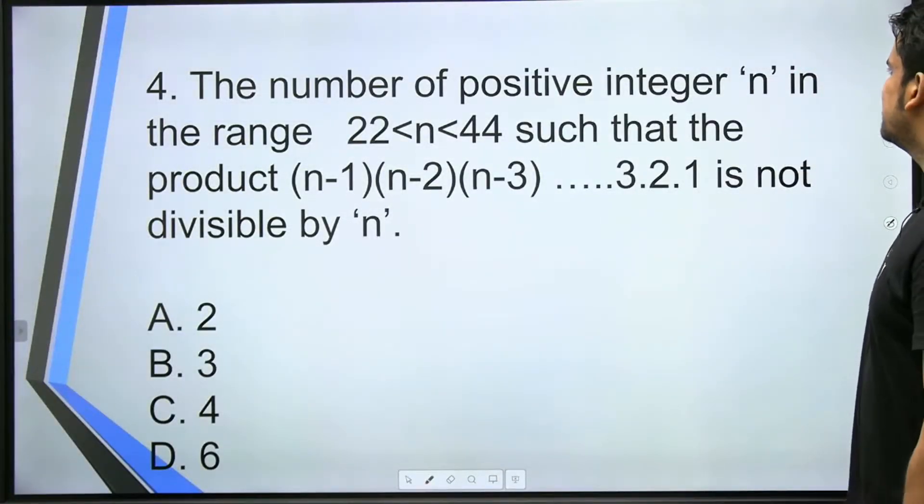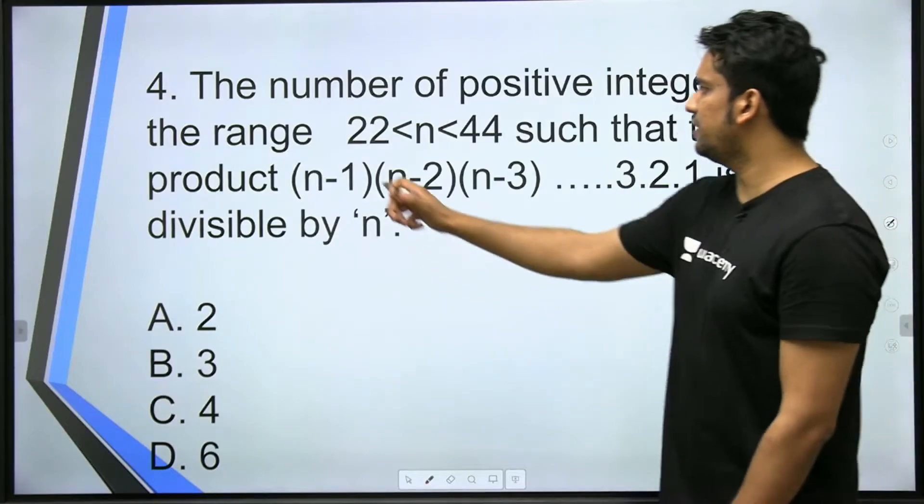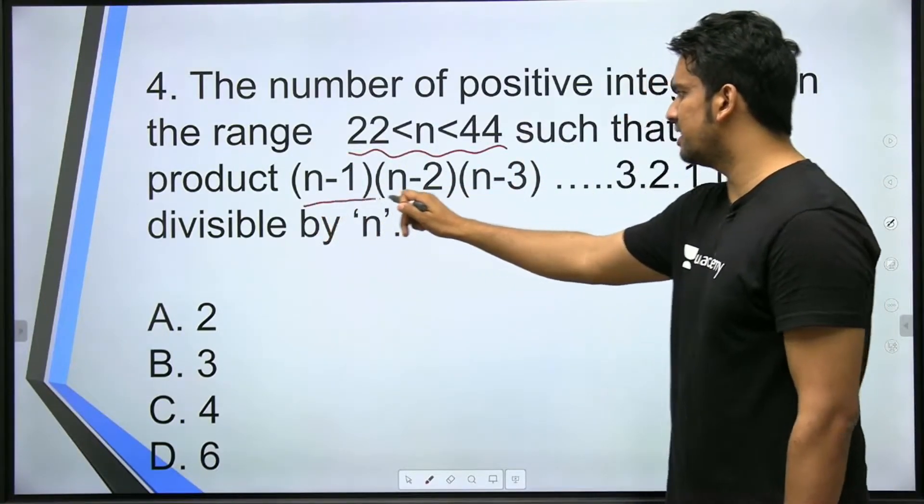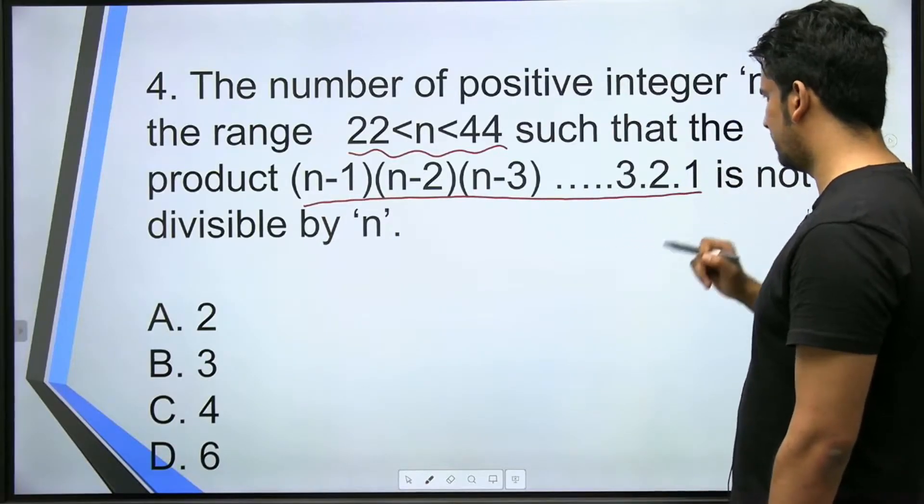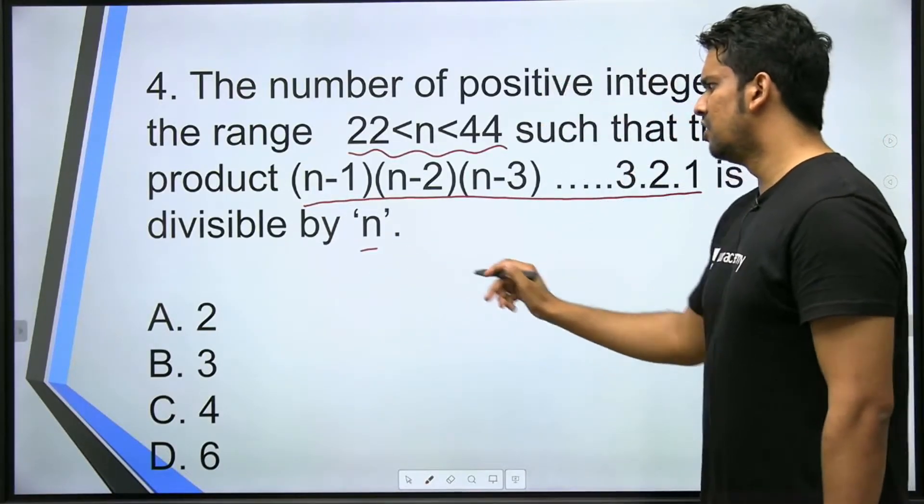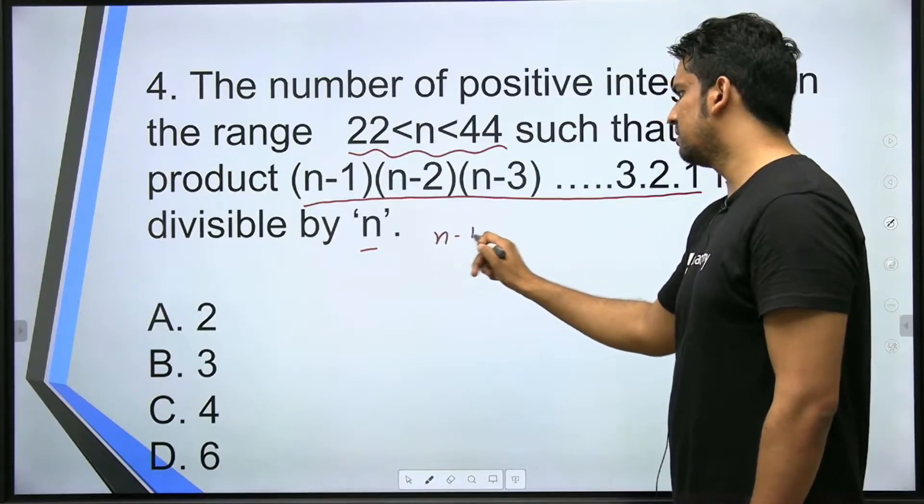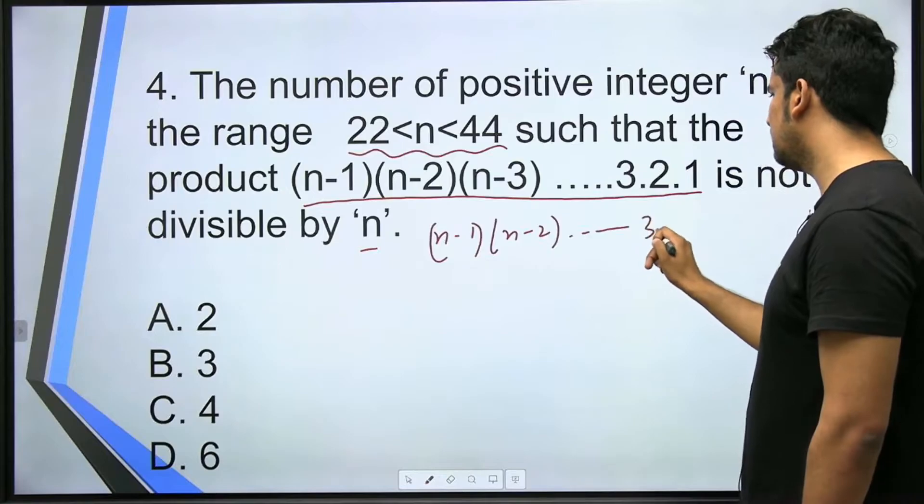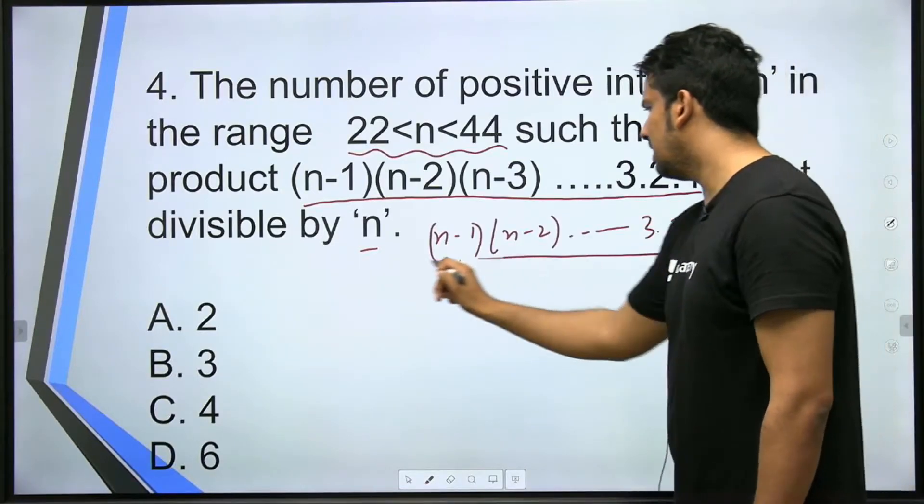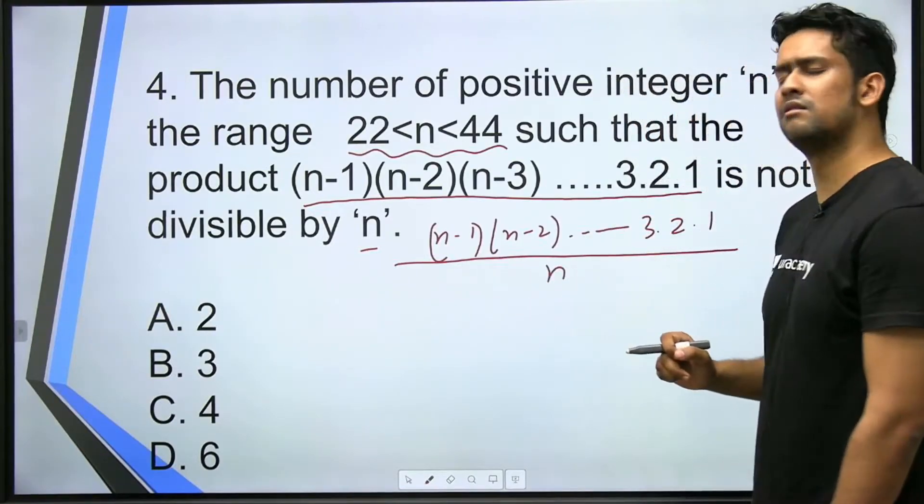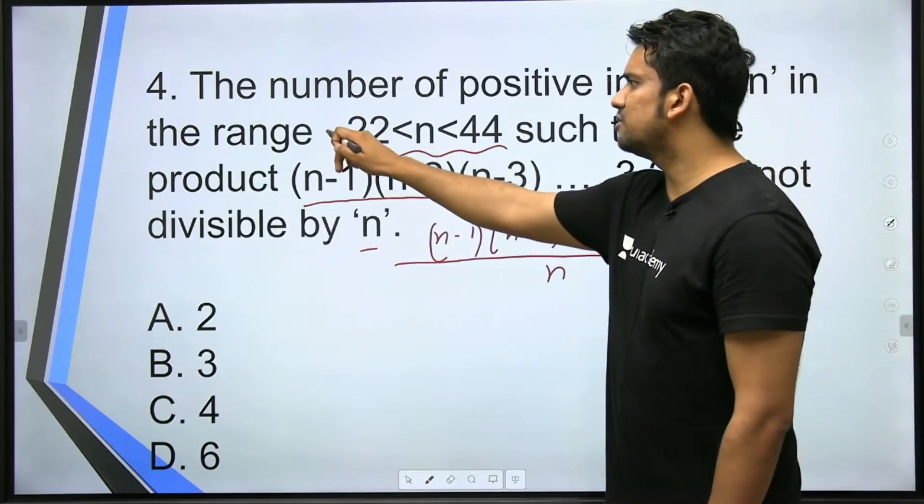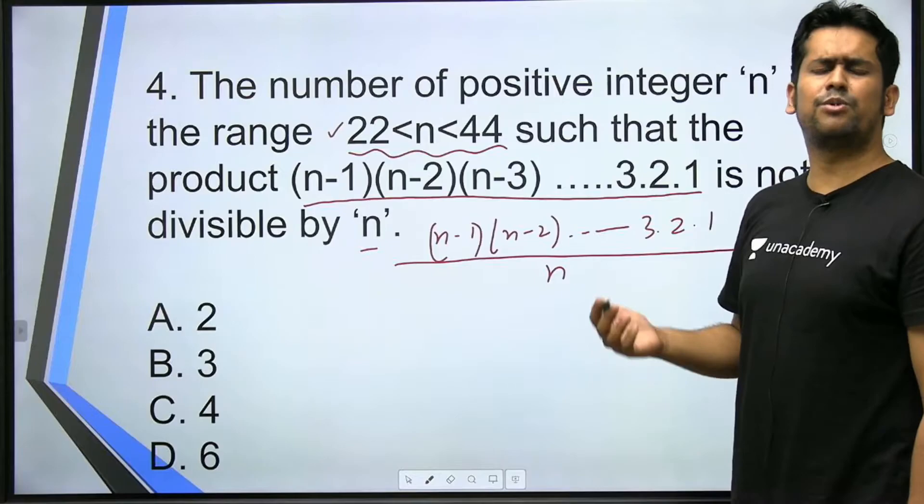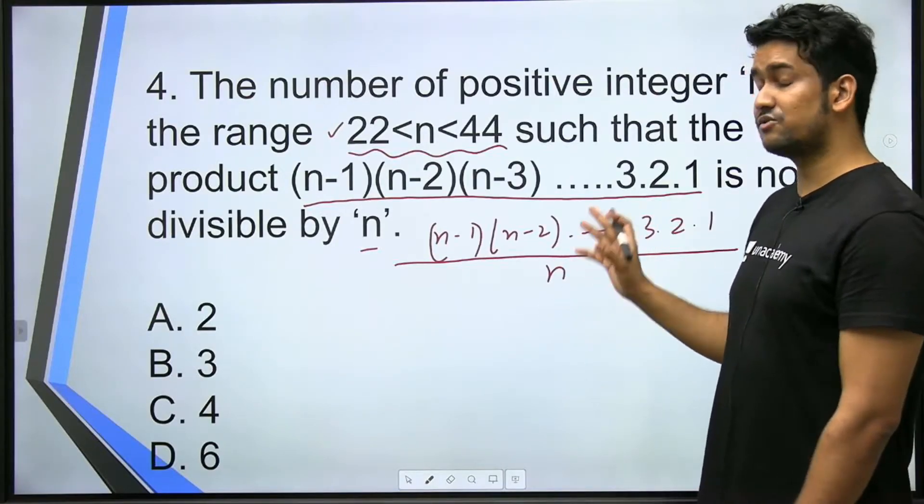Okay. Next question. The number of positive integers n in the range 22 to 44 such that the product (n-1)(n-2) and so on of 2, 3, 2, 1 is not divisible by n. He's saying that n minus 1 into n minus 2 and so on continuing to 3, 2, 1, this should not be divisible by n. And n should be in this range. Tell me how many positive integers are possible. The equation may look very complicated but it's very easy.